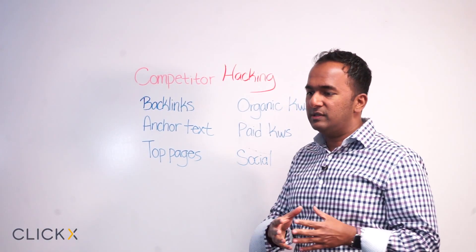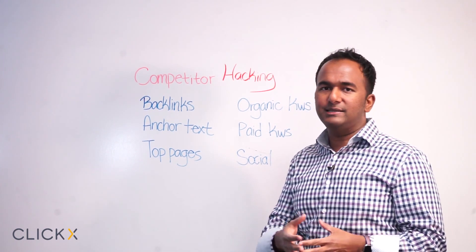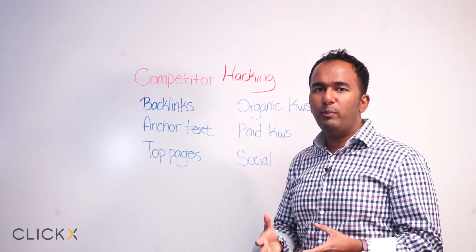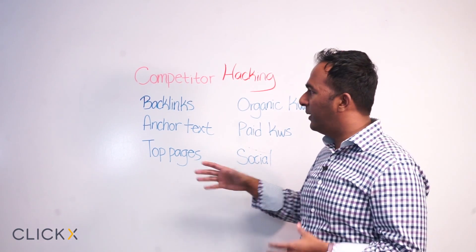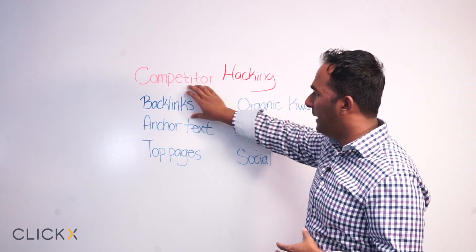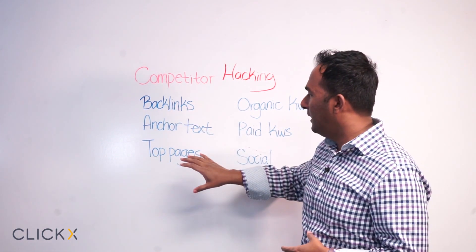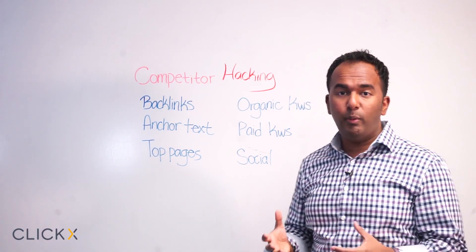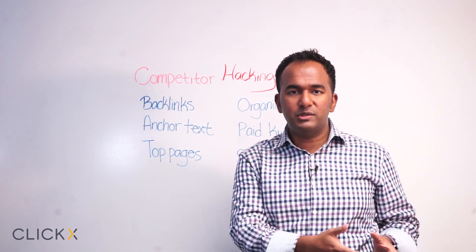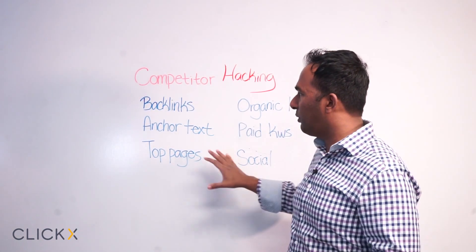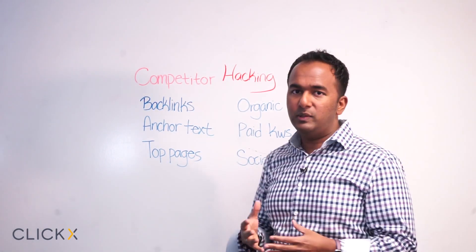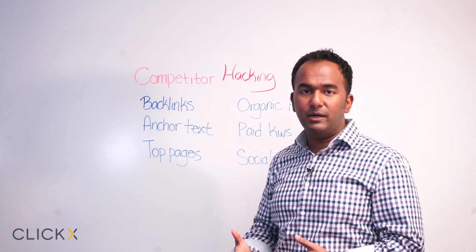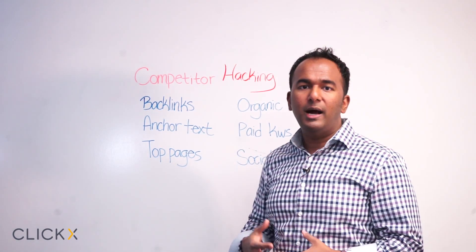Beyond the on-site things you can read — like the copy, the call to action, the brand story — from a platform perspective you should be tracking backlinks, anchor text data, top pages, organic keywords, paid keywords, and social media strategy. It's important to benchmark yourself against your competitors. When you have to do this across 5, 10, 20, or 30 competitors, the amount of work is massive. Make it easy on yourself so you can accomplish this in a timely manner, because having insight doesn't do you any good unless you're actually going to act on it.